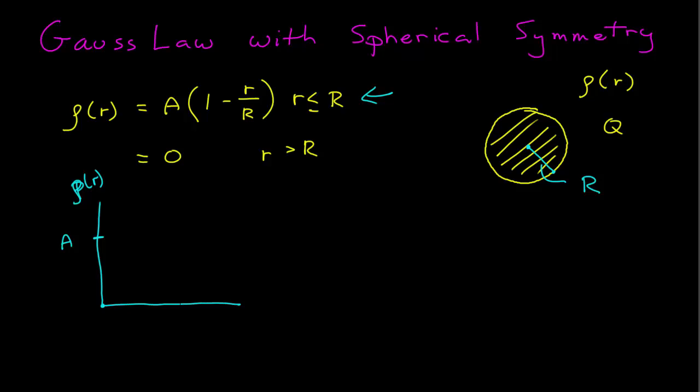And then at R, when r equals R, this term is 1, 1 minus 1 is 0, so it goes to 0. It's A at 0 and 0 at R. And it looks like it's just decreasing linearly, this is just some line. So the charge distribution is some line between this A and 0 over a distance R. So that's useful to know.